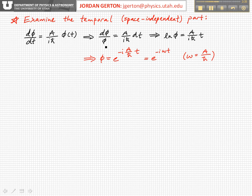...is just the natural logarithm of that function φ. And we integrate the right-hand side, and we get just the integral over dt is t. We already have a constant in there, so we don't need to add another one.